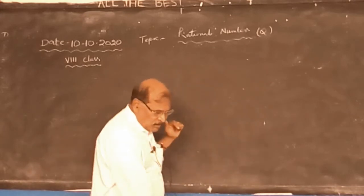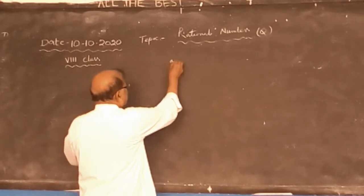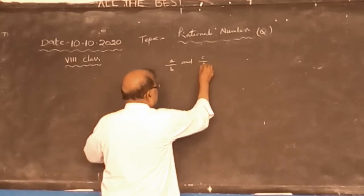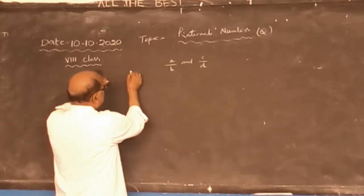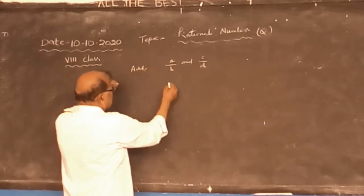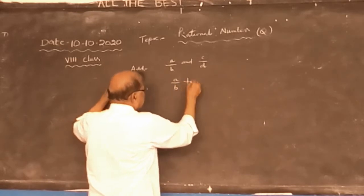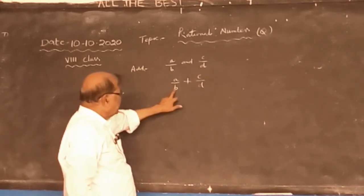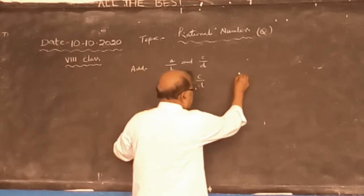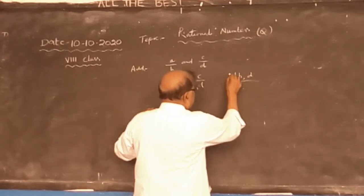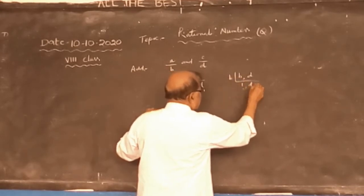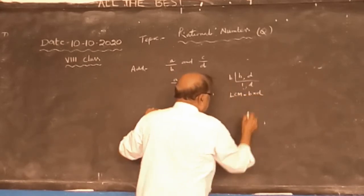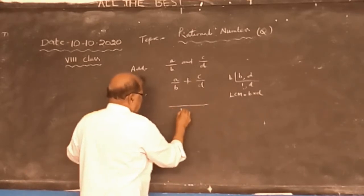So let us suppose there is a rational number A by B and there is another rational number C by D. Add them. So A by B plus C by D. What are the denominators? B and D. So take LCM of B and D. The LCM is B into D.